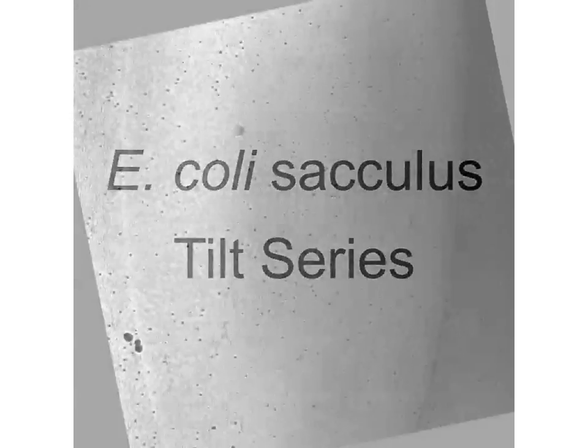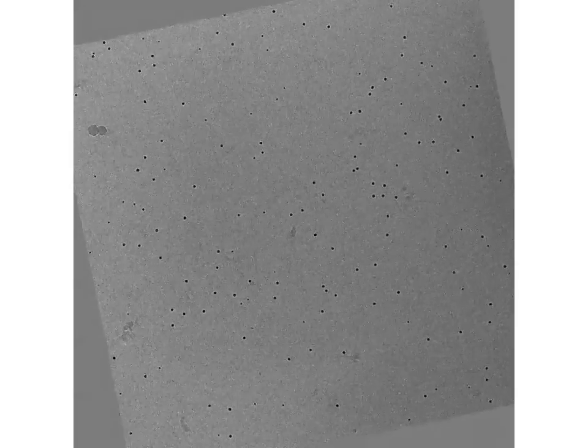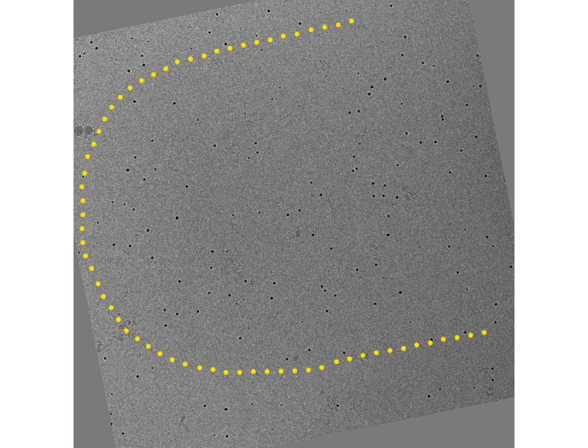This is an E. coli sacculus tilt series. In the zero tilt image, the sacculus is outlined by a yellow dotted line.